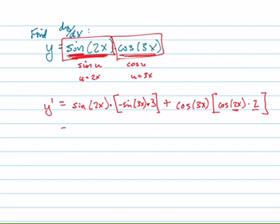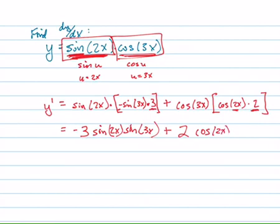Okay, so now let's clean this up. So that equals, this negative 3 is going to come out to the front. Negative 3 sine 2x sine 3x. Those by the way can't be combined together, at least not in a very simple way right now. And then I take the 2 out to the front and I multiply by, let's write the cosine 2x first and let's write the cosine of 3x.